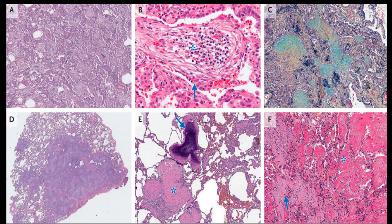The low-magnification photomicrograph in panel D (hematoxylin and eosin stain) shows a focal organizing pneumonia lesion that was surgically resected. The low-magnification photomicrograph in panel E shows cicatricial organizing pneumonia with densely hyalinized and fibrotic luminal plugs (asterisk) and metaplastic bone formation (arrow), associated with preservation of the underlying lung architecture. The high-magnification photomicrograph in panel F shows acute fibrinous and organizing pneumonia, characterized by intralveolar fibrin in the form of balls (asterisk) and intraluminal fibromyxoid lesions of organizing pneumonia (arrow).